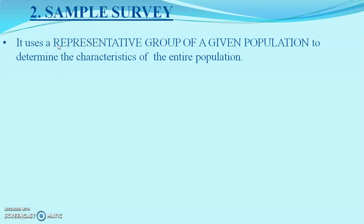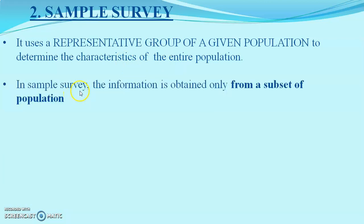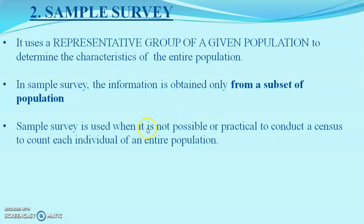A sample survey uses only a subset of the population from which we collect the data, to determine the characteristics of the entire population. In a sample survey, information is obtained only from a subset of the population, or a representative group of the given population. Sample surveys are used when it is not possible or practical to conduct a census.